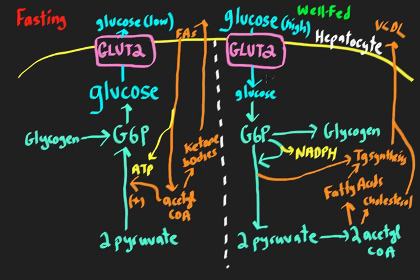Now going to the other side — the well-fed state — where we've eaten a meal and we have lots of glucose and want to store energy. The liver is a very important place for that. The liver is going to clear some of that glucose — insulin promotes glucose uptake in skeletal muscle and fat, and that's important too, but focusing on the liver, the glucose taken up here is going to be very dependent on that glucose being phosphorylated to G6P to maintain the concentration gradient so it can continue to be taken up.